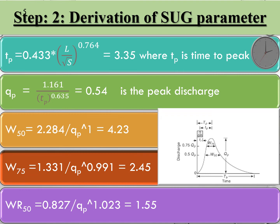First, we calculate tp equal to 0.433 times L divided by the square root of S, raised to 0.74, where L is the length of the mainstream bed divided by S equivalent. This gives a value of 3.35, where tp is the time to peak. Similarly, qp, W50, W75, and WR50 can also be calculated.